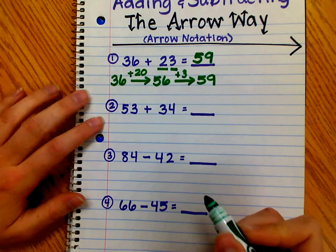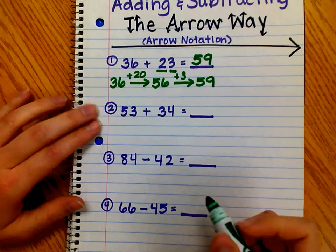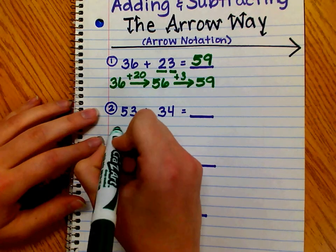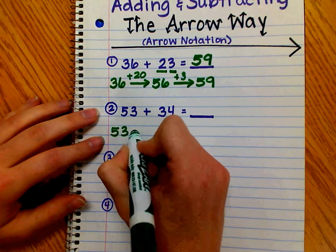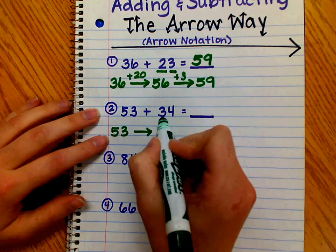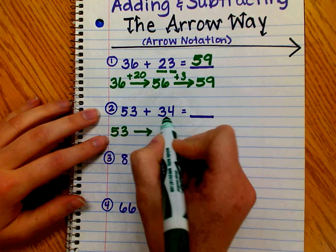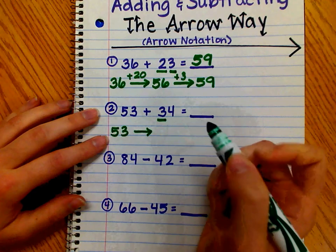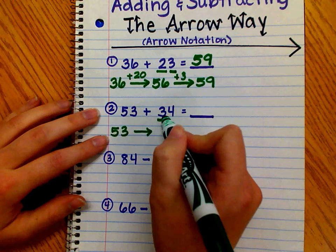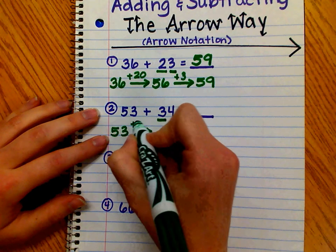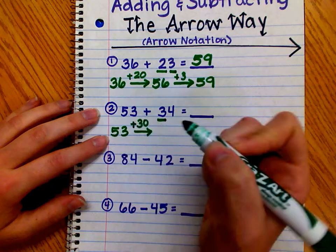I'll show you again with 53 plus 34. We're starting with the first number, 53. Draw our arrow. Now, we're adding 34. We start with the tens. We add the tens. There are three tens. Three tens is equal to 30. So, we're adding 30.